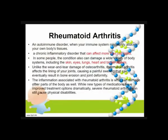Next is your RA, also known as rheumatoid arthritis. This is an autoimmune disorder where our own immune system mistakenly attacks our own body's tissues — a chronic inflammatory disorder that can affect more than just the joints. In some people, the condition can also damage a wide variety of body systems including the skin, eyes, lungs, heart, and blood vessels.